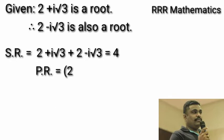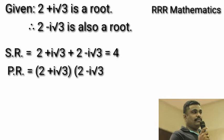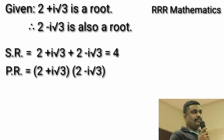Product of the root: 2 plus i root 3 into 2 minus i root 3. Product of complex number and its conjugate is sum of the squares of real part and imaginary part. That is 2 square plus root 3 whole square, which gives 4 plus 3 which equals 7.